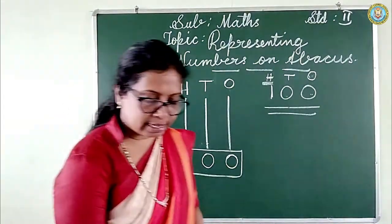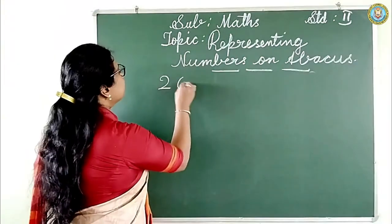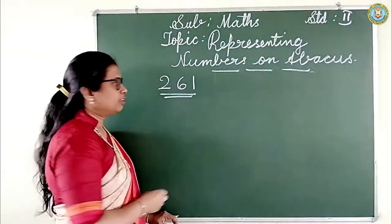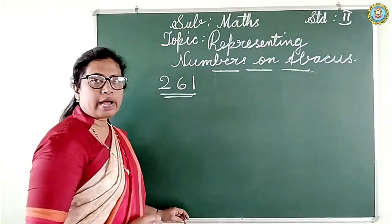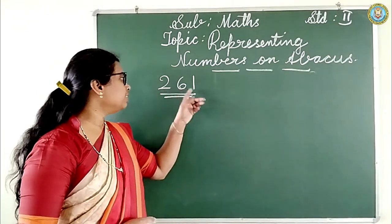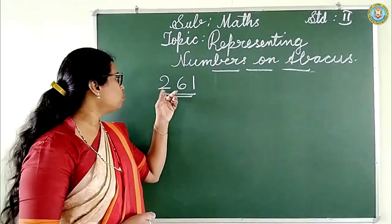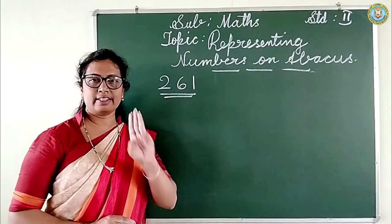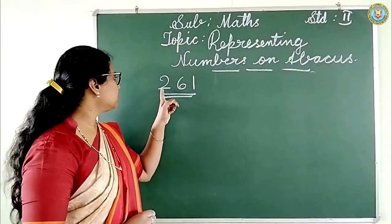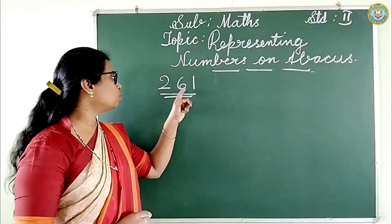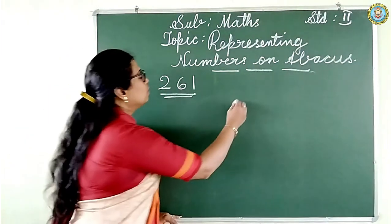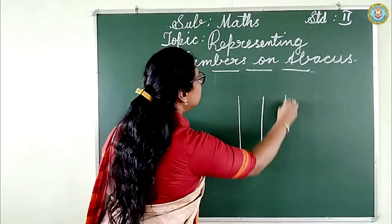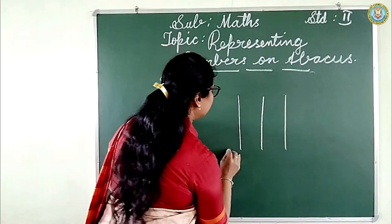Look at another example. The number given is two hundred and sixty one. How many digits are there? Three digits — one, two, three. So take three spikes.